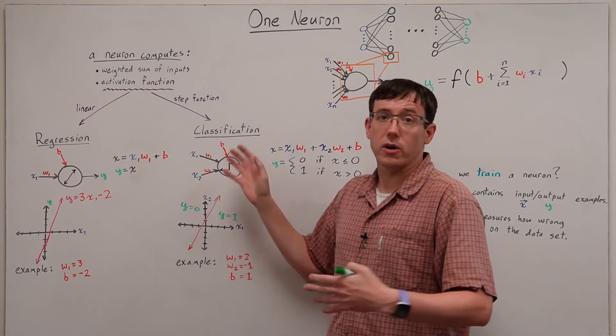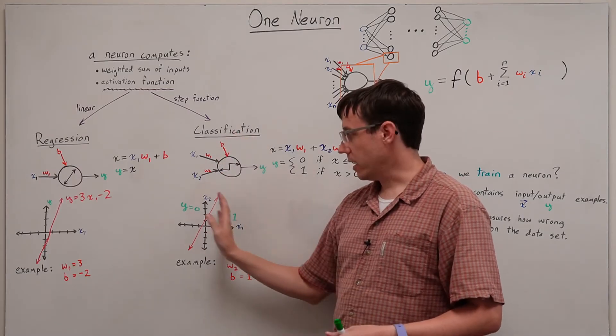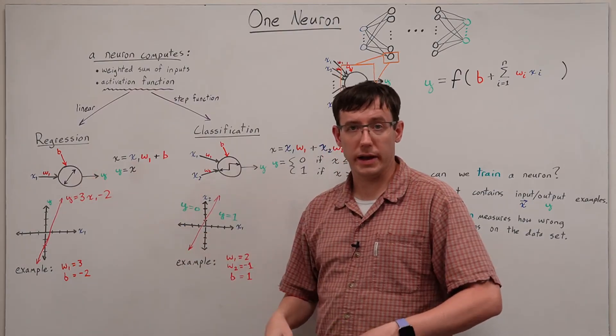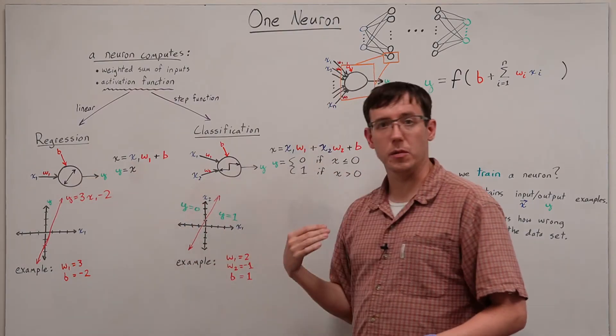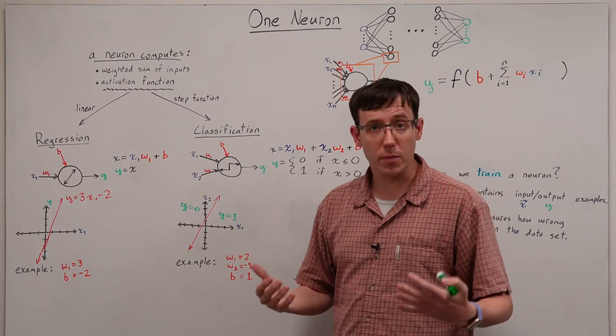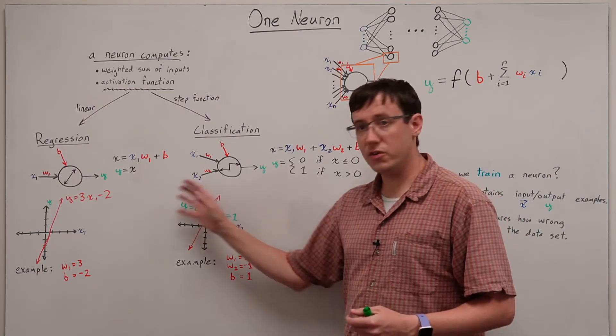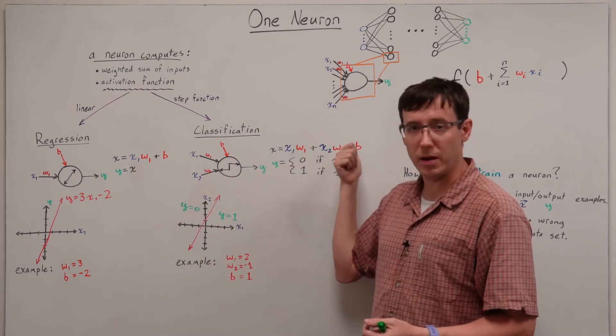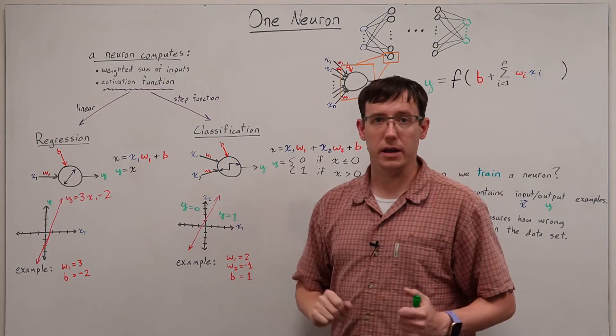So if we're using this for classification, then we are labeling the inputs on one side 0 and labeling the inputs on the other side 1. So the machine learning problem here would be based on the data set to choose the best w1, w2, and b to classify the data.